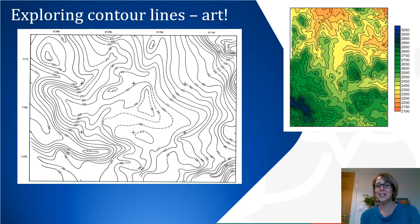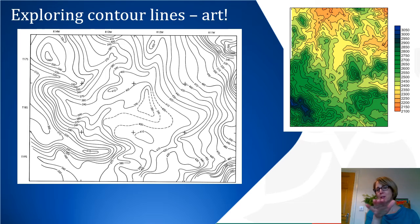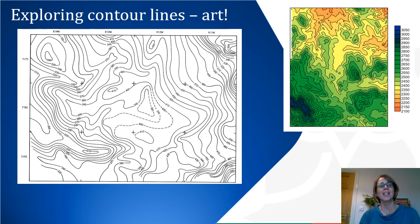Fantastic — so we're all complete experts now! We've just learned that when the lines are quite far apart, the slope on the land is quite shallow, quite a gradual slope, whereas when the lines are very close together, it's a really steep mountain.